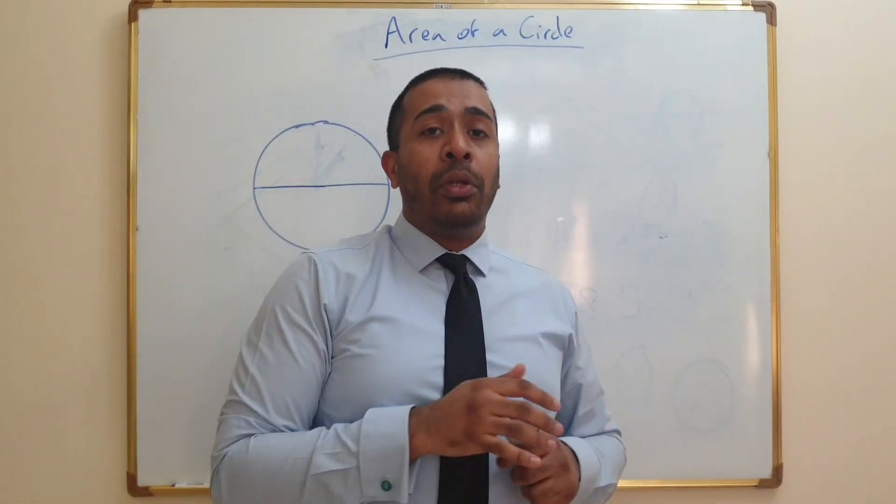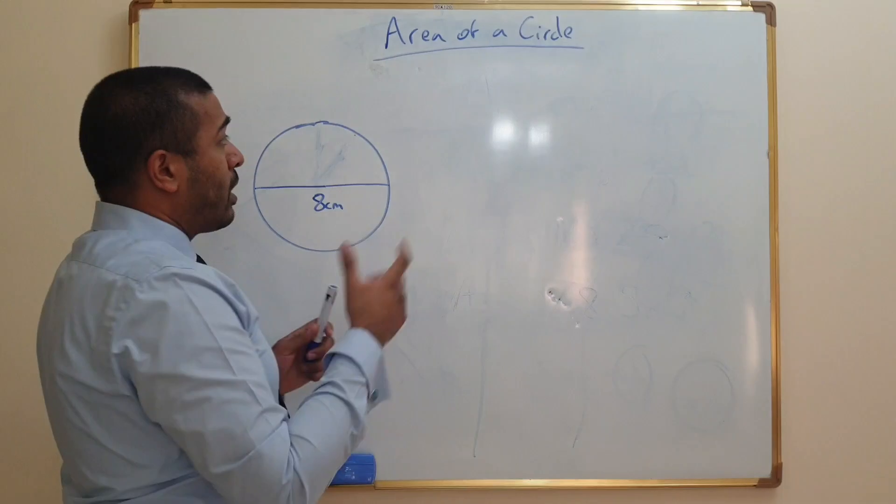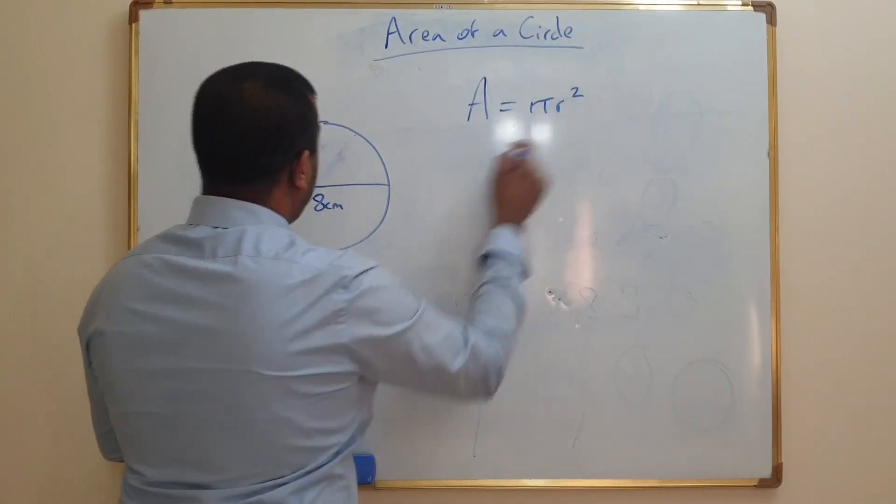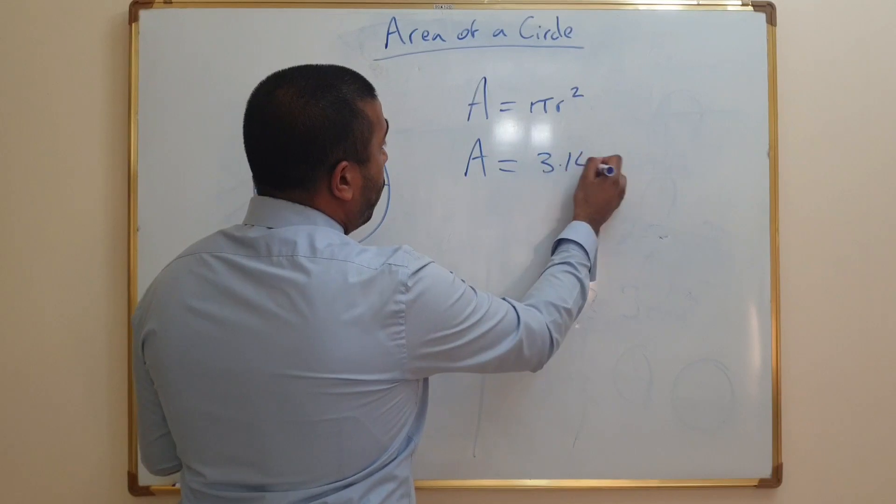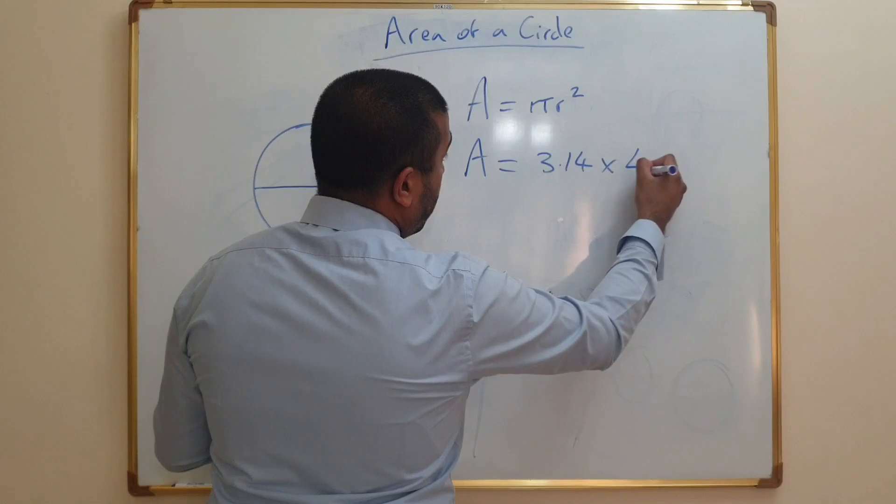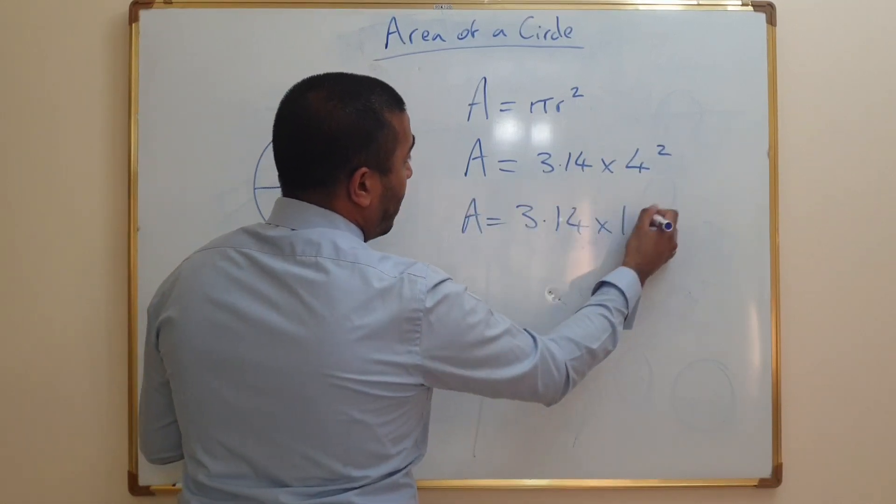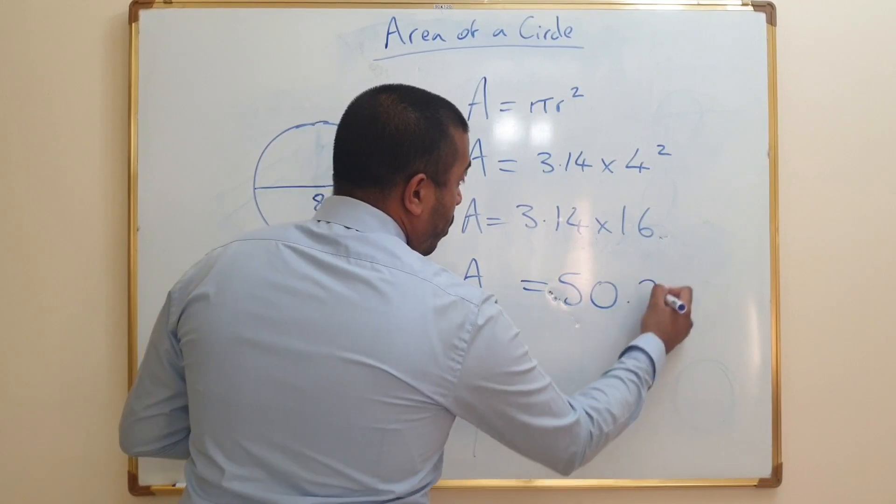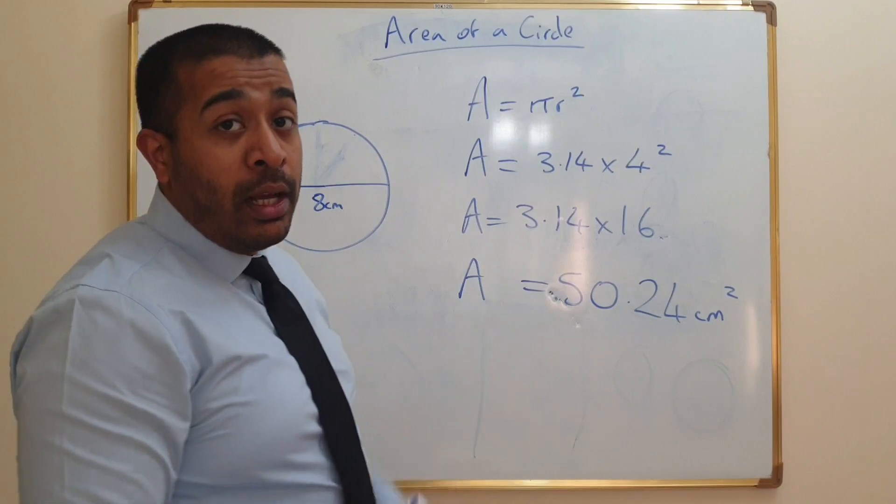Okay, let's say for example you are given the diameter instead of the radius. So let's say the diameter is 8 centimeters. Well in that case, you just have to make sure you still use pi r squared, and don't forget you have to half the diameter. So area equals 3.14 times 4 squared, so area equals 3.14 times 16, so the area equals 50.24 centimeters squared. Don't forget to add the centimeters squared because it is area that we are dealing with.